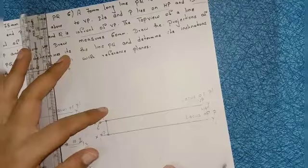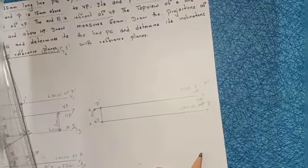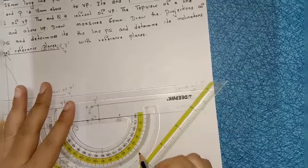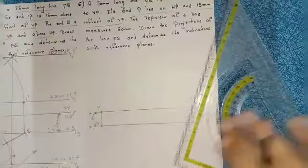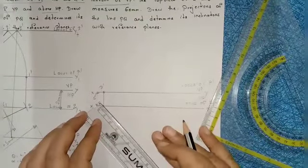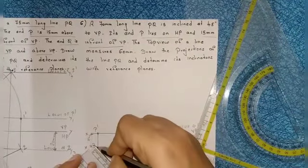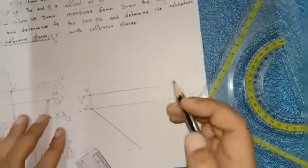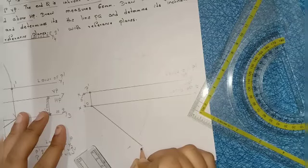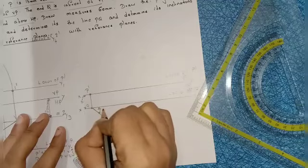Now mark the angle: 45 degrees to VP means I should mark the angle in HP. Take your protractor and mark 45 degrees. Draw a line equal to the true length, which is 70mm. By 45 degrees angle, draw a line equal to 70mm and name this point as Q. The angle here is 45 degrees.